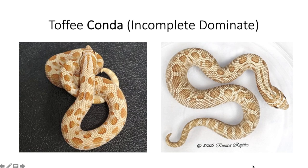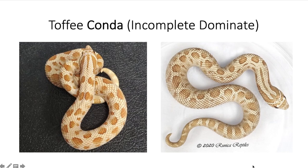When we have two copies of the anaconda gene — one from the mom, one from the dad — you get the super form. This is where you have the toffee super conda, also known as the candy. It looks very similar to the super conda albino, but it's kind of that light brown color — a very pretty snake with that light brown head pattern. It's a very cool looking super conda hog nose snake.